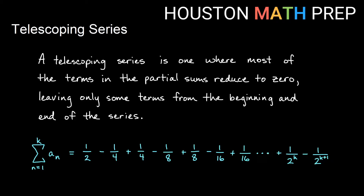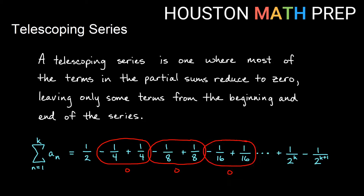You can kind of see what's happening. I have some stuff that's going to reduce and some stuff that does not. I have my minus a-fourth and my positive a-fourth, obviously adding up to zero, and the same thing's going to happen with the next pair, and the next pair. However far we go out in the list of terms, we're going to keep getting that a negative term cancels with the positive term after it. So we'll get lots and lots — massive amounts — of canceling of terms.